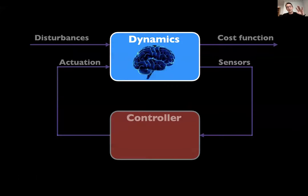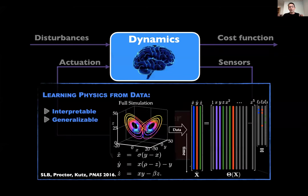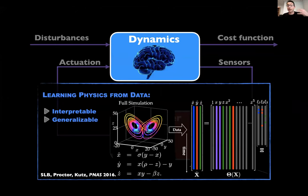Just as a teaser: the same mathematical architecture you can use to understand sensing on insect wings can help aircraft manufacturers design their wings. This sparse sensor technology dramatically streamlines a manufacturing process at Boeing, and is currently in production on the 787, 777X, and 737 MAX — with estimated savings in the hundreds of millions of dollars. But today I'm going to talk almost exclusively about building interpretable, generalizable physics models from data.